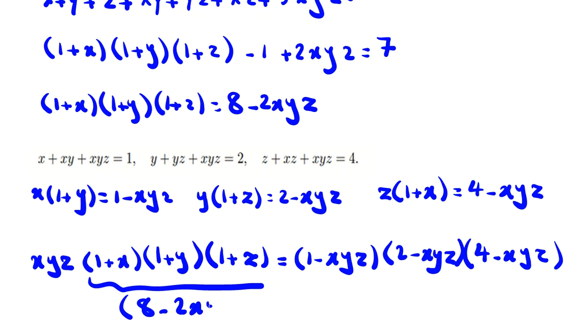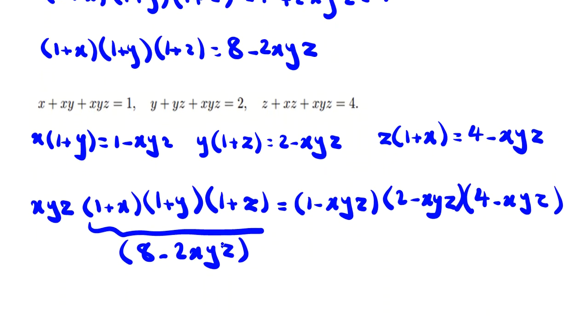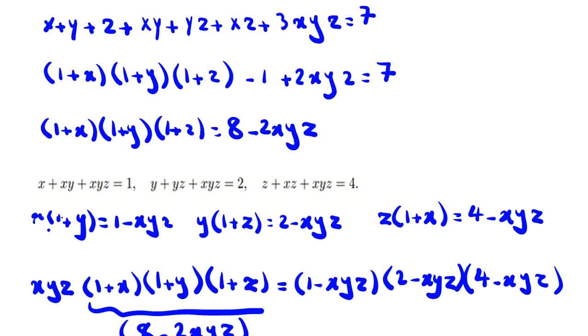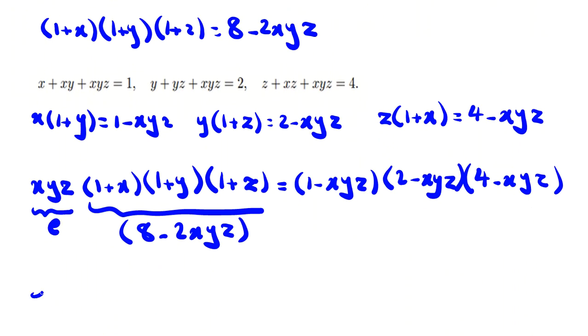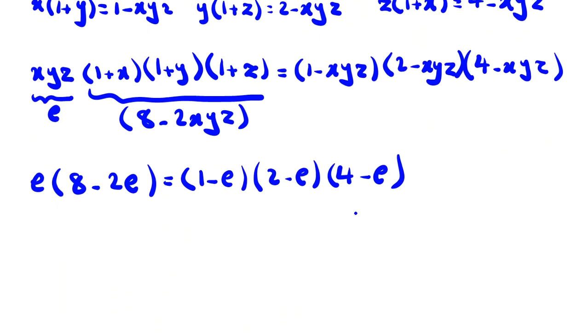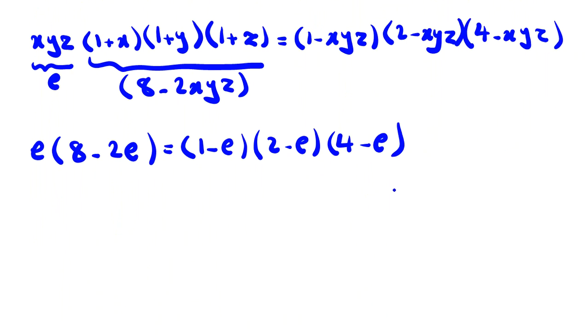By this equality, this part is 8 - 2xyz. So we conclude we've written an equation with one variable. The variable is xyz. Let's call this e. So e(8 - 2e) = (1 - e)(2 - e)(4 - e). We will reach an equation with degree three.